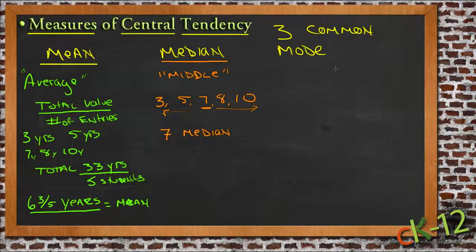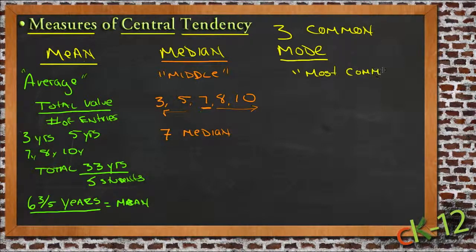Finally, the third calculation is the mode. This is a really bad example for mode, so we're going to add another value. The mode is the most common number or most common value.